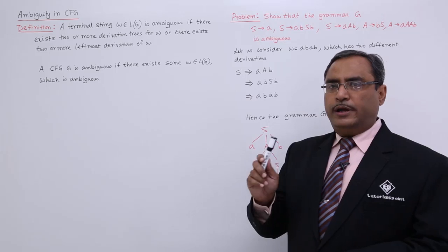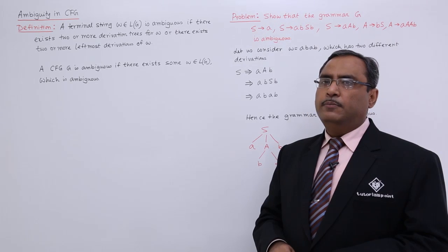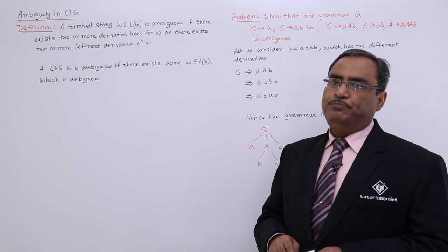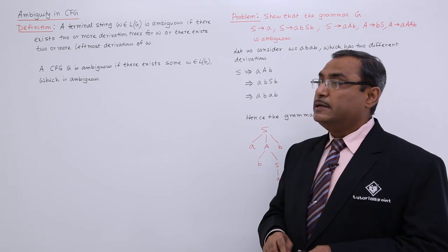which belongs to L(G), the language of the grammar, we are having more than one derivation tree, and if it is so then we can say that the grammar is ambiguous.